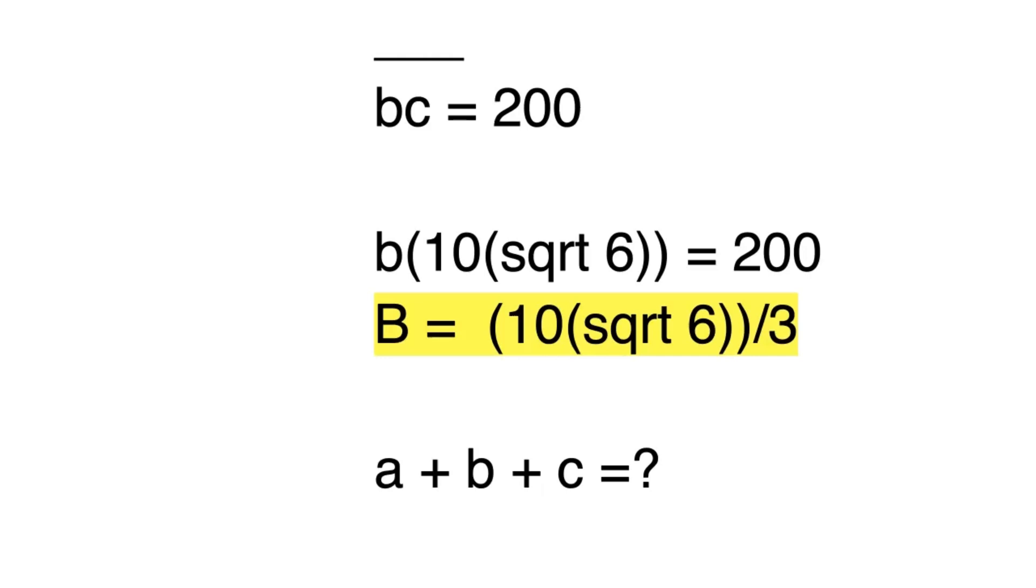Divide both sides by 10, we get 20 over square root 6. Multiply the numerator and denominator by square root 6, so then you get 20 times square root 6 over 6, which simplifies to B equals 10 times square root 6 over 3.